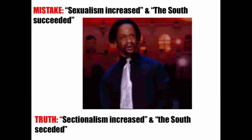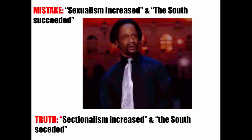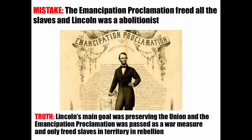This next one is tough — it's not 'sexualism increased and the South succeeded,' it is 'sectionalism increased and the South seceded.' And the most popular mistake: the North was against slavery. The truth is, even on the eve of the Civil War, abolition was not a majority movement in the North. Many Northerners in the 1840s and 50s came to oppose the extension of slavery into territories and many didn't like the Fugitive Slave Act of 1850, but the actual abolition of slavery was not very popular.